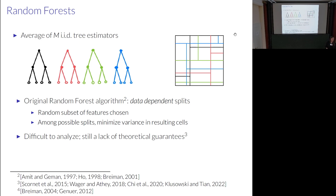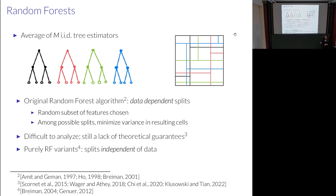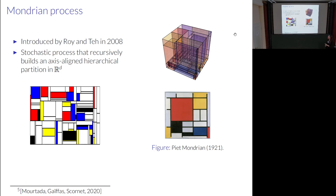This data-dependency of the partitioning process makes the algorithm very difficult to analyze. Even though there's been recent progress, and there's more theory than for neural networks, there's still a lack of theoretical guarantees that come close to explaining the algorithm's performance in practice. To study the theoretical properties, people started studying simplified versions called purely random forest variants, where the partition of the input space is generated independently of the data.